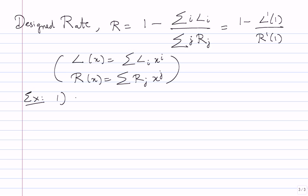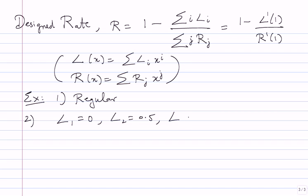It's good to think of some examples. The first example is the regular examples. For a simple irregular example, suppose I take L_2 to be 0.5, L_4 to be 0.25, and L_8 to be 0.25 — but all the L_i's have to add to 1. L of 1 equals 1 and R of 1 equals 1 must be satisfied. For row weights, suppose I allow only two consecutive weights WR and WR+1.